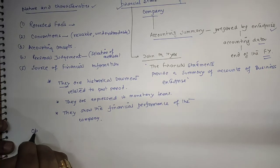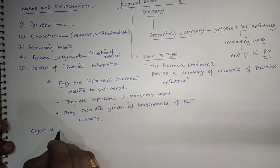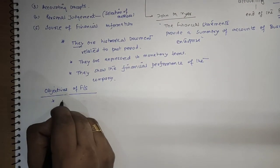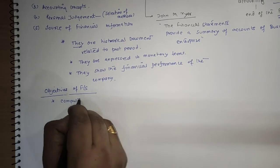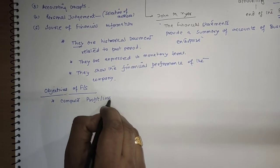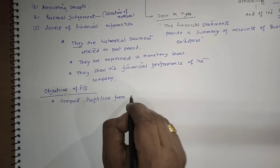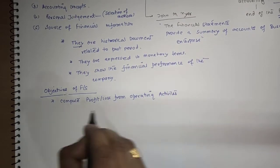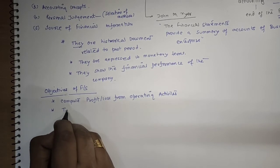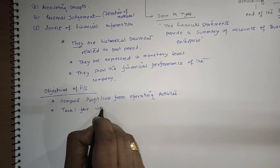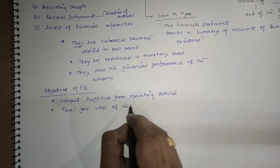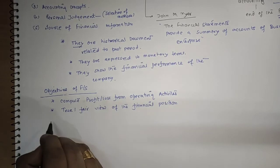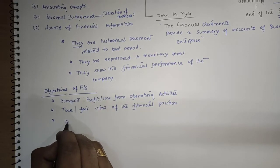Now what are the objectives of financial statements? The first objective is to compute profit and loss from operating activities. Second, it gives a true and fair view of the financial position. Third, it gives information on economic resources.